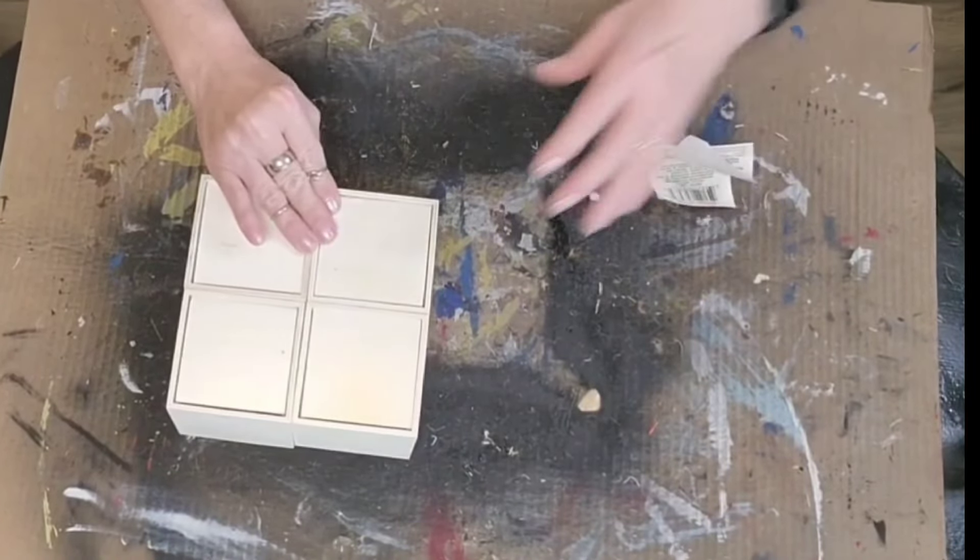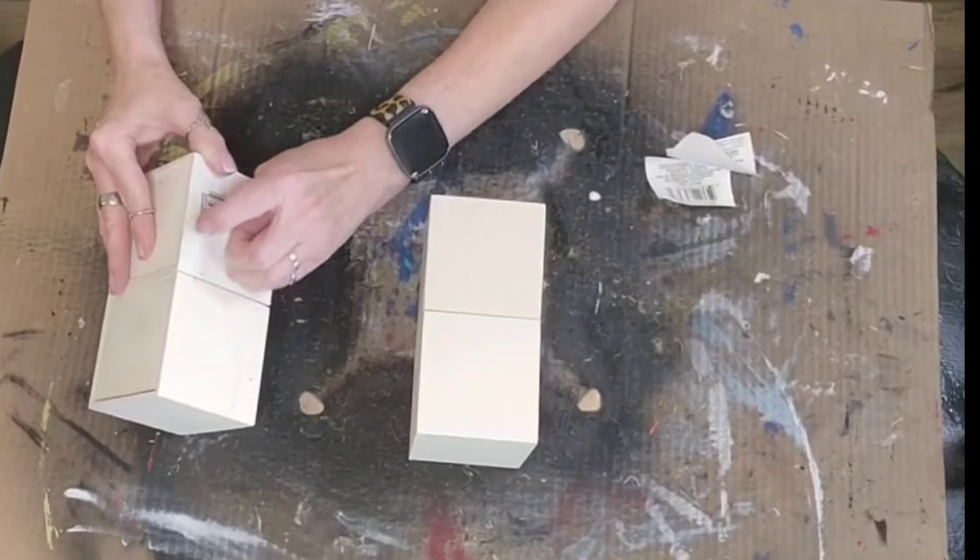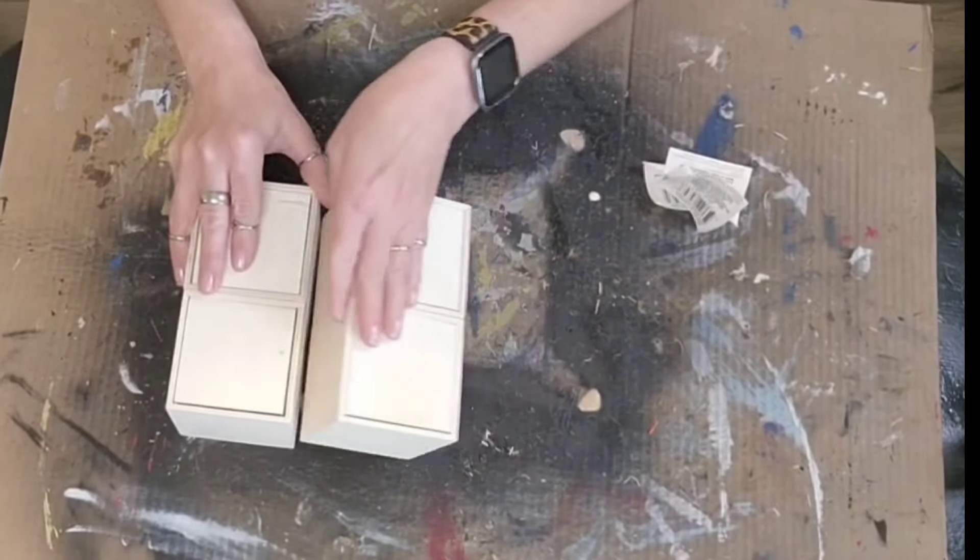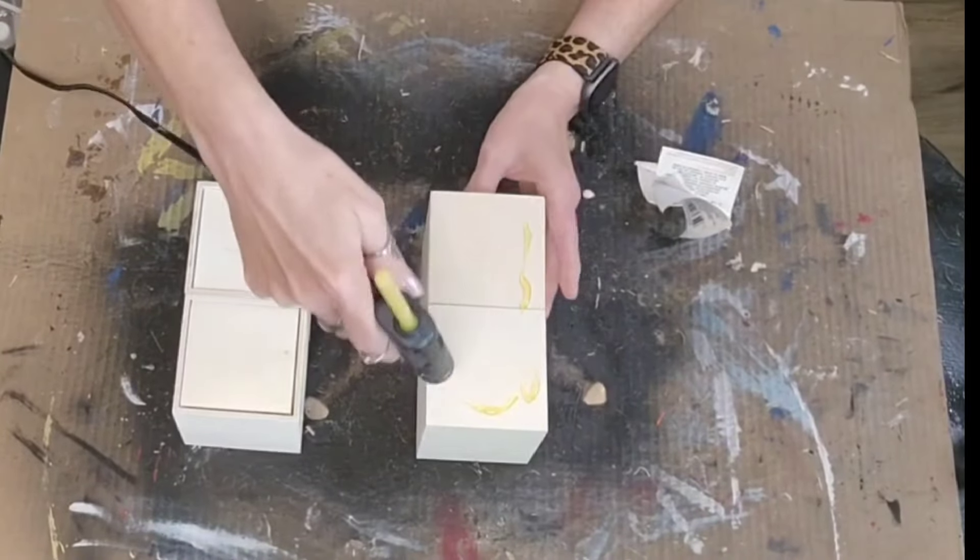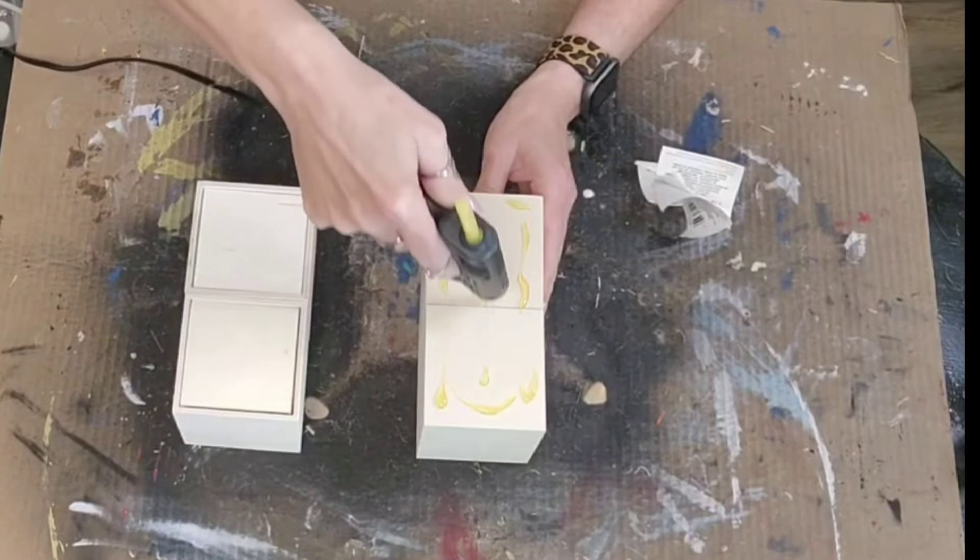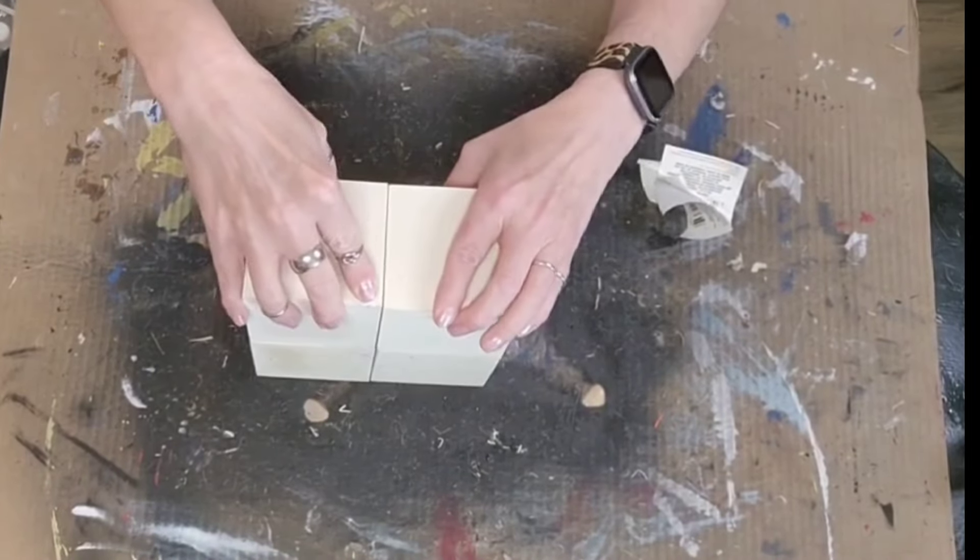I am the world's worst about not removing my tags before I start a project, so I had to stop and peel all my tags and get all those off. And then the two pieces that I had already glued together, I put some wood hot glue on the side and I made a square out of the four boxes.